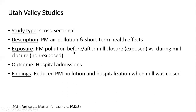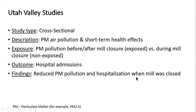The exposure was particulate matter pollution before and after the mill closure — that would be the exposed group — versus during the mill closure, the non-exposed group, because pollution levels would be lower at that time. So they tagged the periods before and after mill closure and during closure to exposed and non-exposed groups. The outcome was hospital admissions, asking: does PM pollution affect hospital admissions? The findings were reduced PM pollution and hospitalizations when the mill was closed.